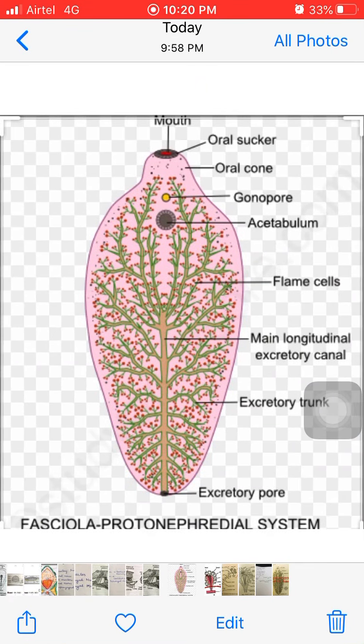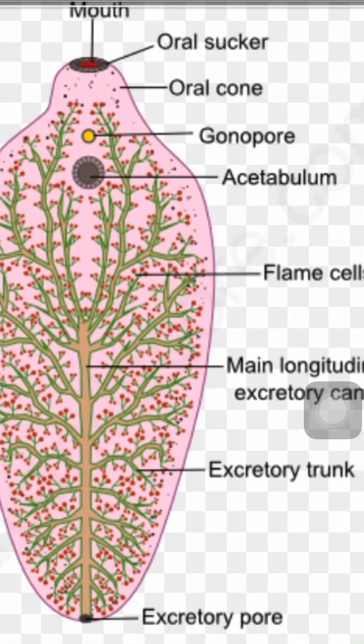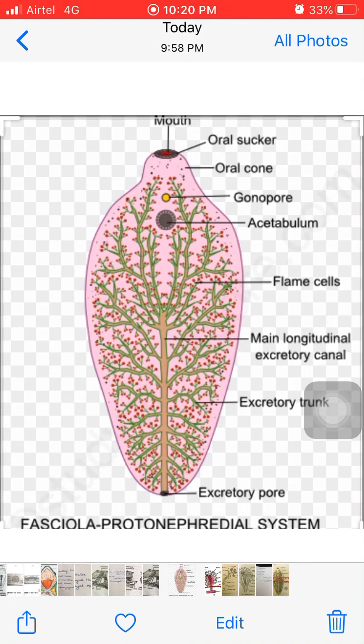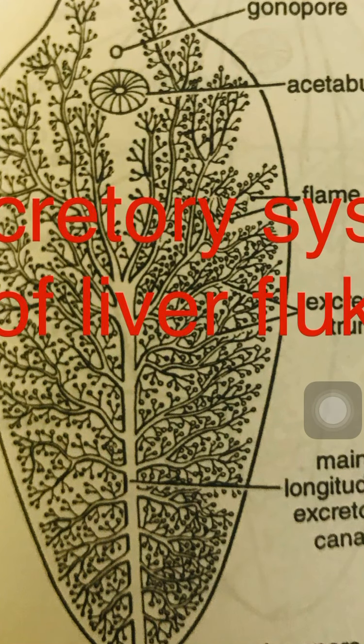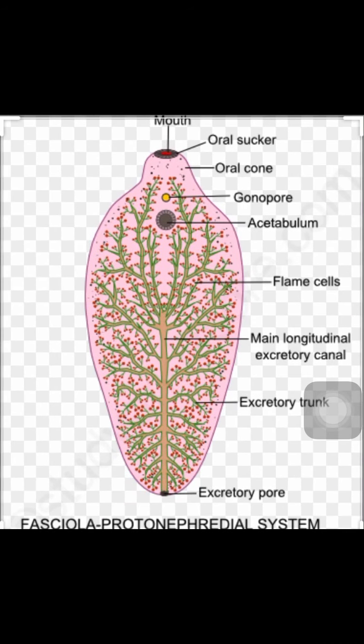There are four longitudinal trunks: two dorsal and two ventral, and they lead into the main trunk. The main trunk is called the longitudinal excretory canal, which opens out by a pore called the excretory pore. The bladder has a muscular wall lined with non-ciliated columnar epithelial cells.